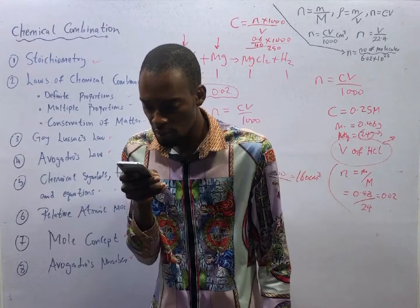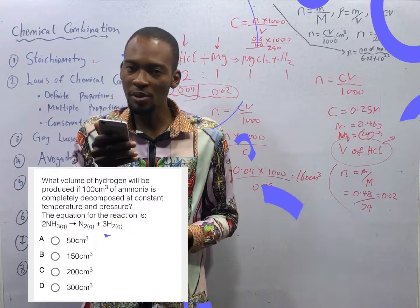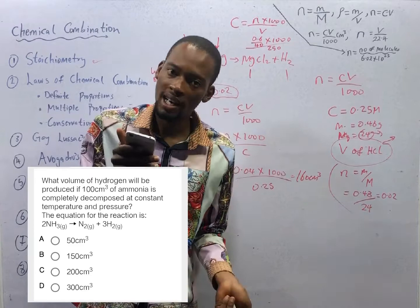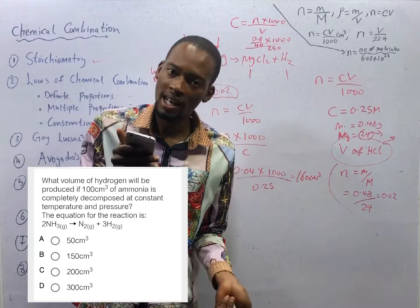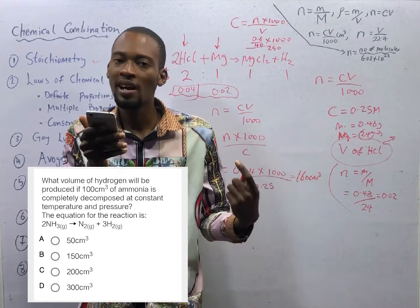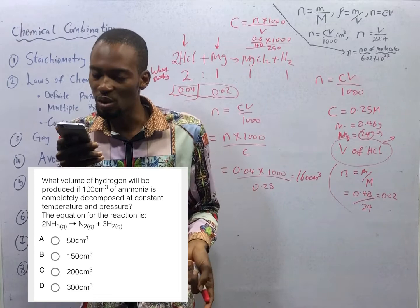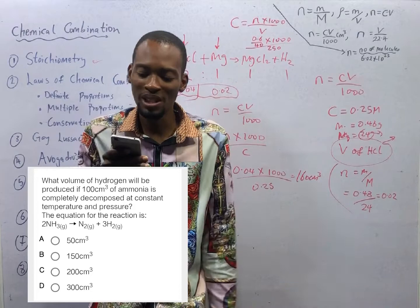What volume of hydrogen will be produced if 100 cm³ of ammonia is completely decomposed at constant temperature and pressure? The ratio is 2:1:3. If ammonia is ratio 2 and we are given 100 cm³, nitrogen is ratio 1, which should be 50 cm³. And if ratio 1 is 50 cm³, hydrogen is ratio 3 — so 50 times 3 equals 150 cm³. Therefore it should be 100:50:150 cm³, and option B is the correct option.